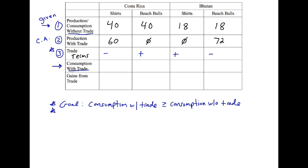Now the fun part — actually solving the problem. We need to prove our goal: consumption with trade must be greater than or equal to consumption without trade. We need this number to be greater than 40. Costa Rica is producing 60, so they can give away at most 20 and still satisfy the goal. Bhutan decided not to produce any shirts, but to be as well off as before they need to receive at least 18. Costa Rica can give up to 20; Bhutan needs at least 18 — so a good number is 19.